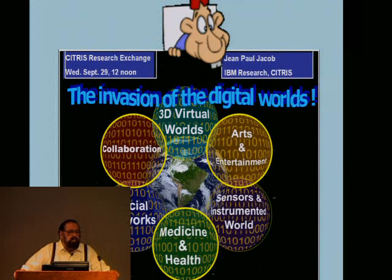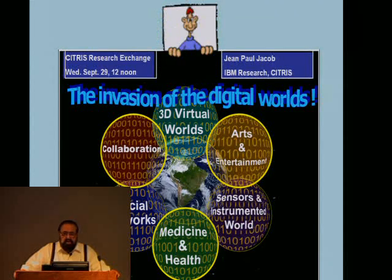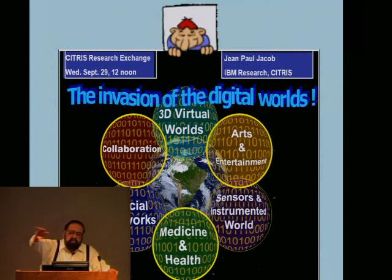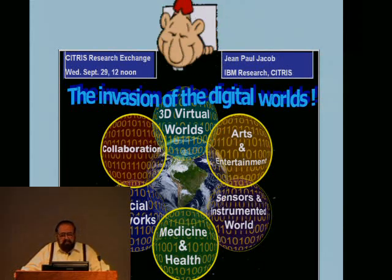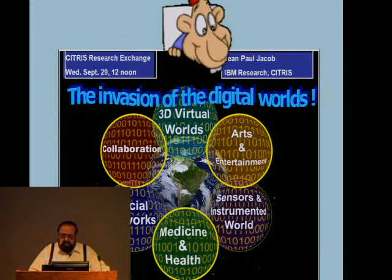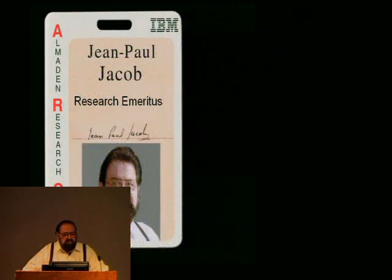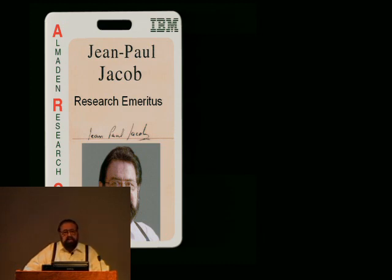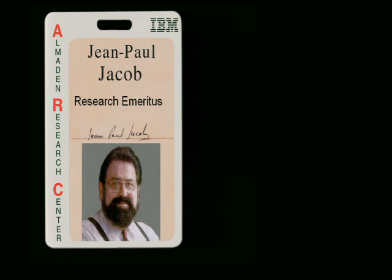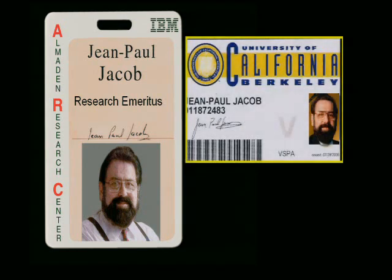Good afternoon, everybody. Thank you for coming. I'm going to be a dessert for your lunch. Those of you who only came for the food, please step to the back of the line, and some of you may be interested in the next three hours for this presentation. My name is Jean-Paul Jacob, as advertised, and I'm a research emeritus at IBM. Emeritus means retired and old, but not dead yet. I worked for IBM until 1962 when I retired, and now I'm also a visiting scholar at UC Berkeley, where I'm a special advisor to Citrus, so my office is in this building.